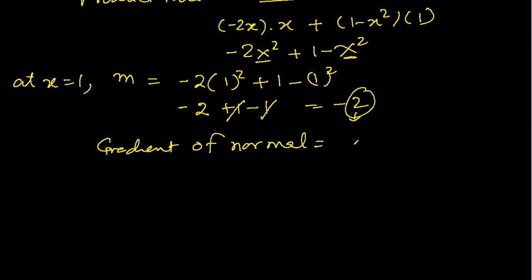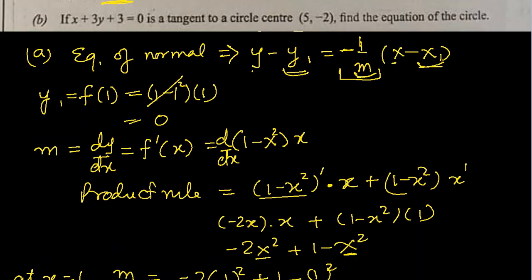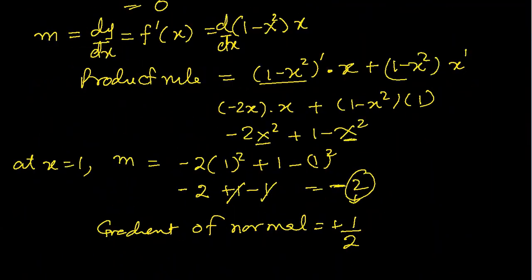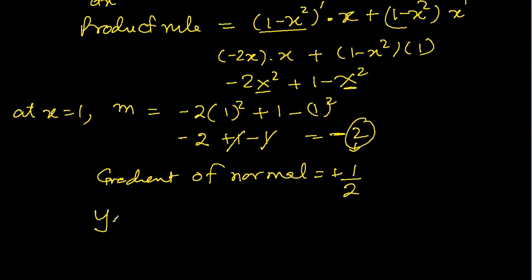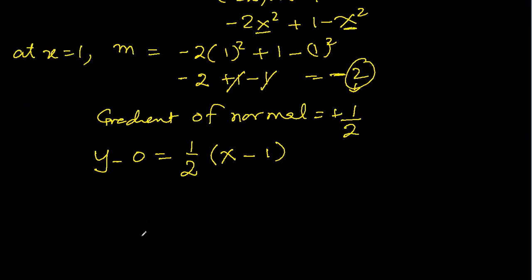We reciprocate 2 to get 1 over 2, and change the sign from negative to positive. So positive one-half is the gradient of the normal. Using the formula y minus y1 equal to minus 1 over m times x minus x1: y minus 0 equals one-half times x minus 1. So the answer is y equal to half x minus half. This is the equation of the normal.